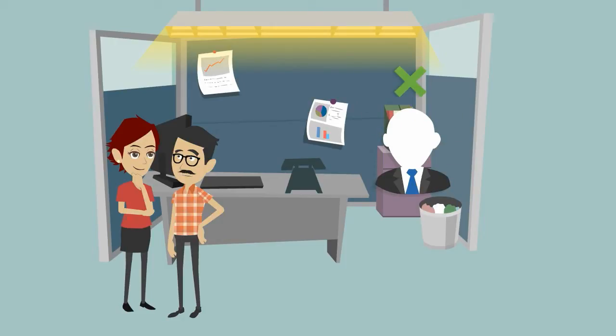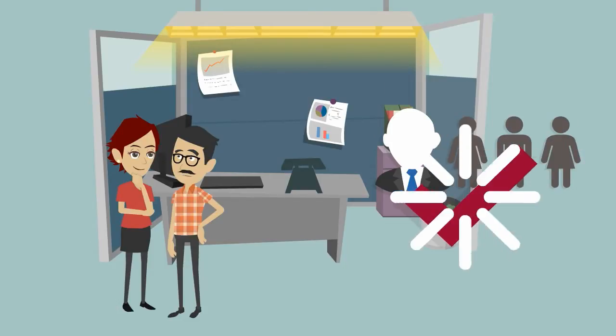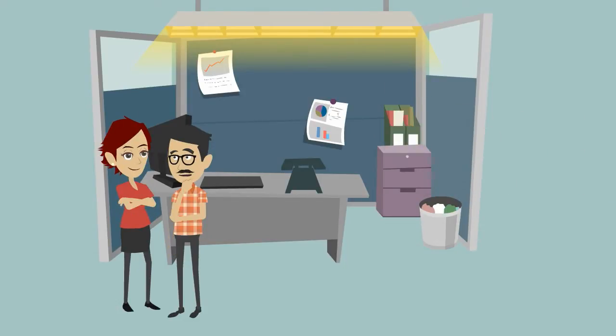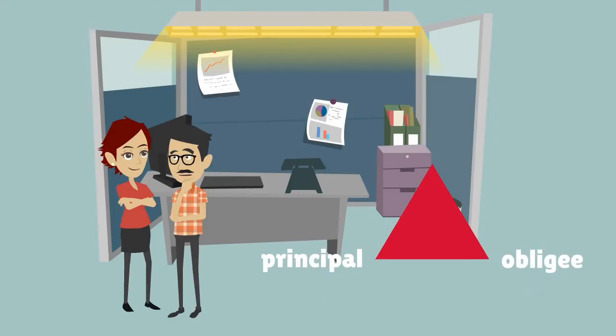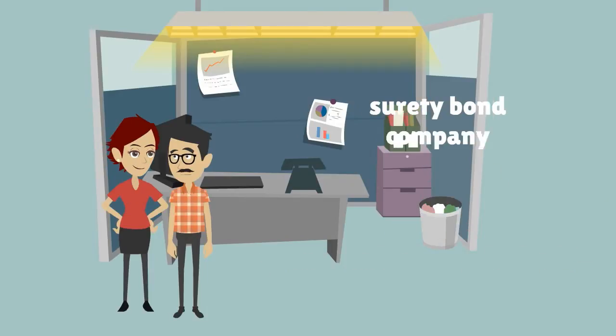In general, surety bonds are not designed to protect your business but rather to protect the public from dishonest business practices. A surety bond is a three-way agreement between you the principal, the obligee typically a government department, and the surety bond company which ensures that the bonded principal will comply with all the rules and regulations.